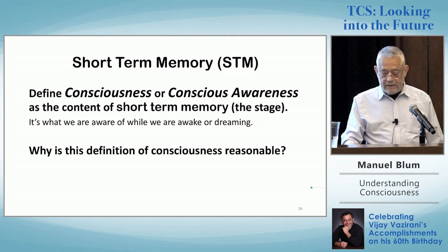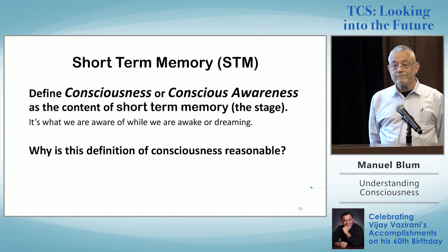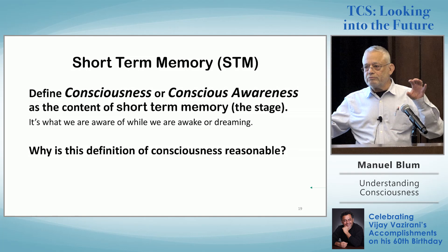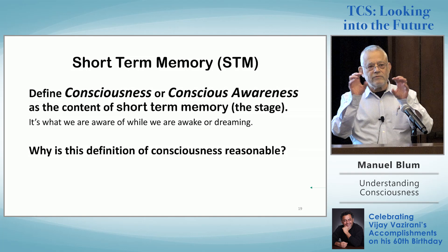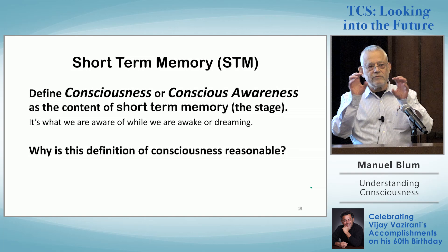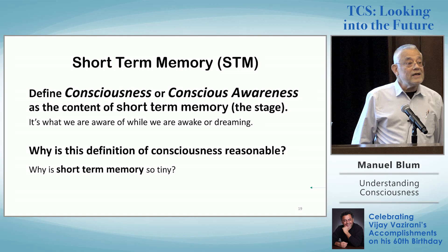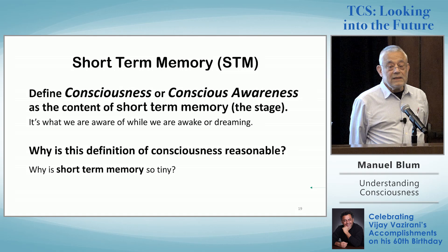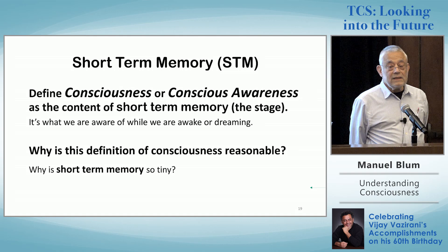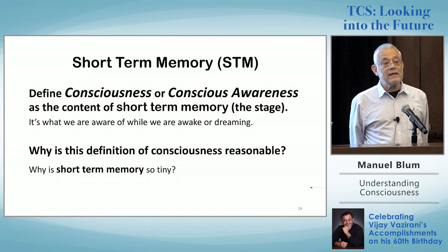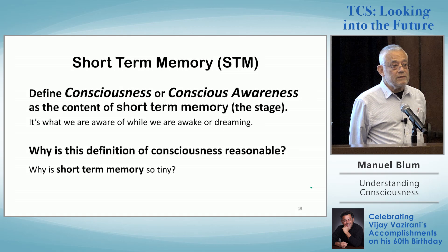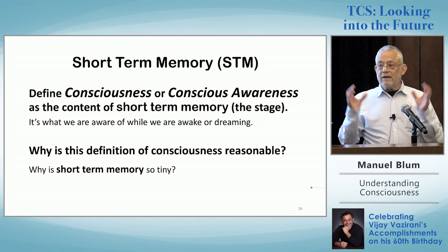Why is this definition of consciousness reasonable? Whatever is in short-term memory is broadcast to every single processor — every processor in the brain is aware of what's going on there. The explanation is that if our consciousness is due to one processor alone, that processor knows what's going on, but it's probably not due to that alone. Every processor knows what's going on. Why is short-term memory so tiny? You want all of these processors to be paying attention to the same thing. If you have very large short-term memory, they cannot be paying attention to the same thing — one will pay attention to this, one to that. If you have very little, each processor is paying attention to the same thing.